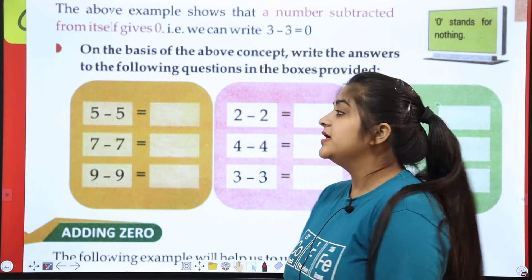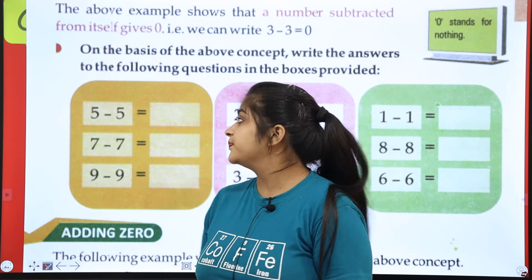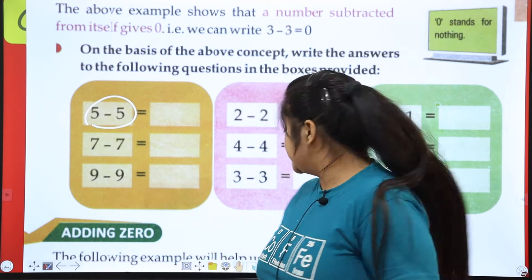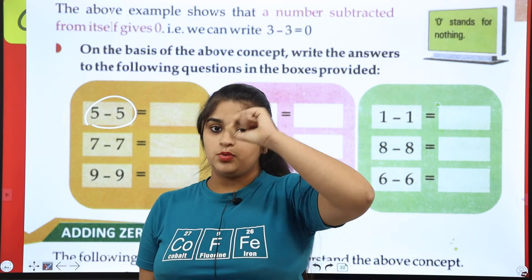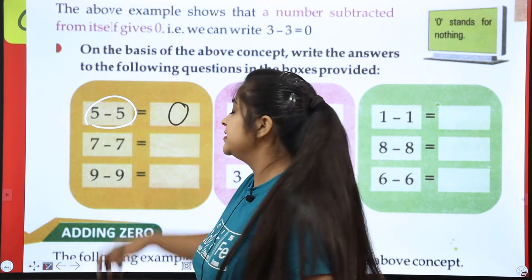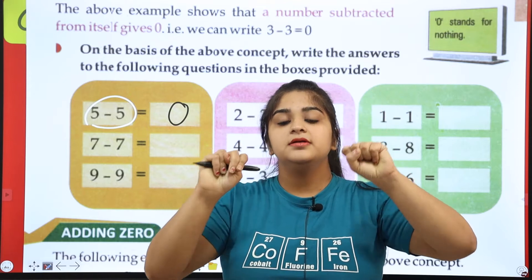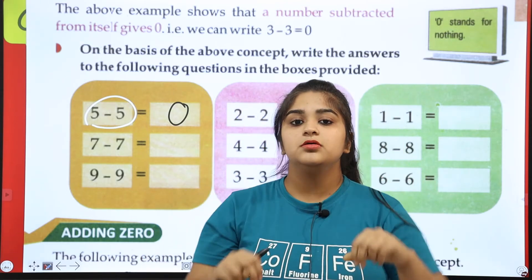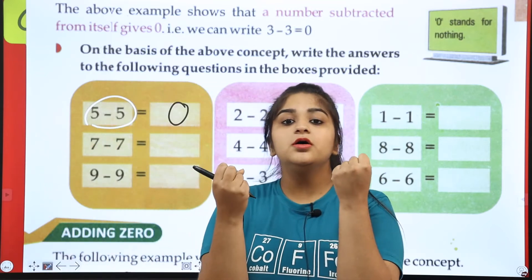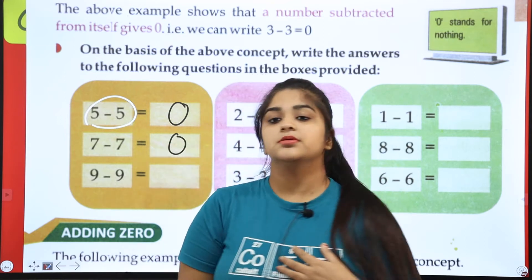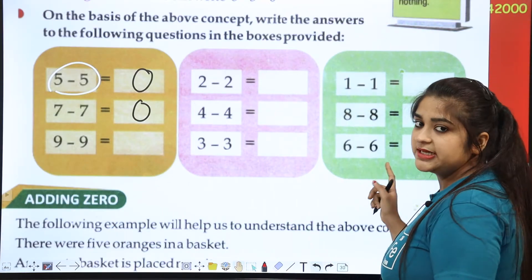Now you will answer the questions in the boxes. If one number is minused by itself, you will give the answer zero. First question: 5 minus 5. So what are you left with? Zero — nothing. So we will write the answer here. The same for the second: 7 minus 7. So what are you left with? Zero. Now you have understood the concept — complete these boxes.